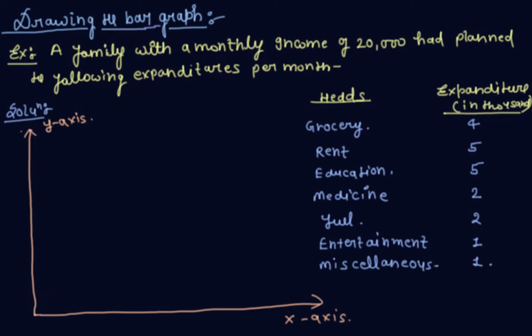We represent the header variables on the horizontal axis. So these are the heads: grocery, rent, education, medicine, fuel, entertainment, and miscellaneous. I'll only write the first letter of each head so you can understand.